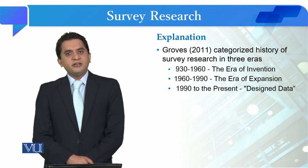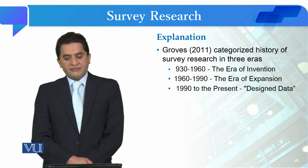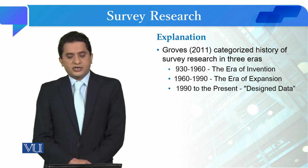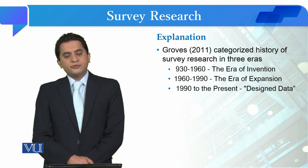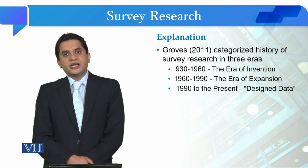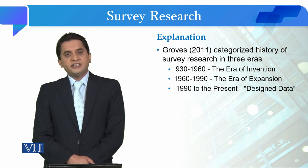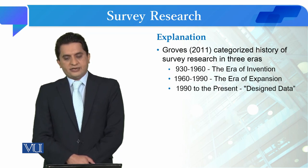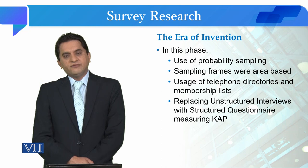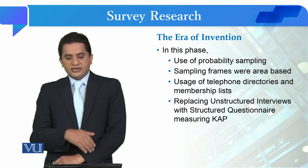In modern times, Groves in 2011 categorized the history of survey research into three eras: from 1930 to 1960 is called the era of invention; from 1960 to 1999 is called the era of expansion; and from 1990 to the present it is called the era of design data. Let us look at the first era, called the era of invention, from 1930 to 1960.